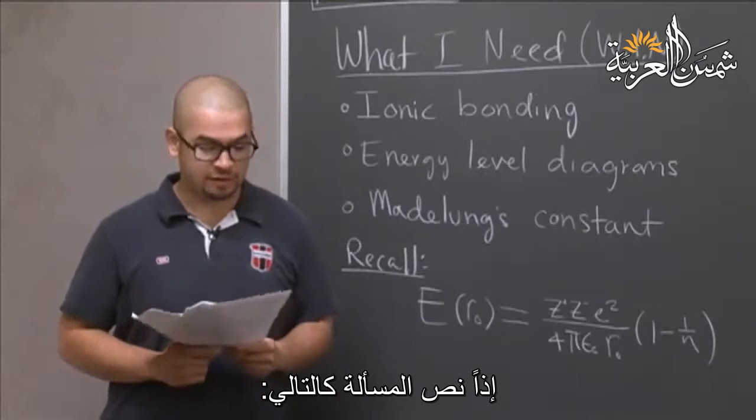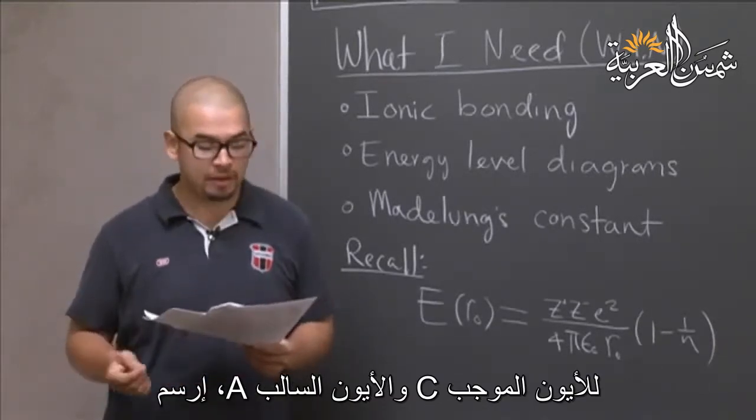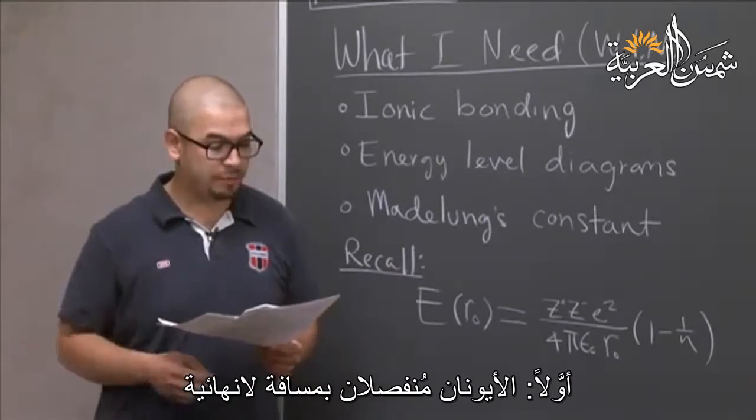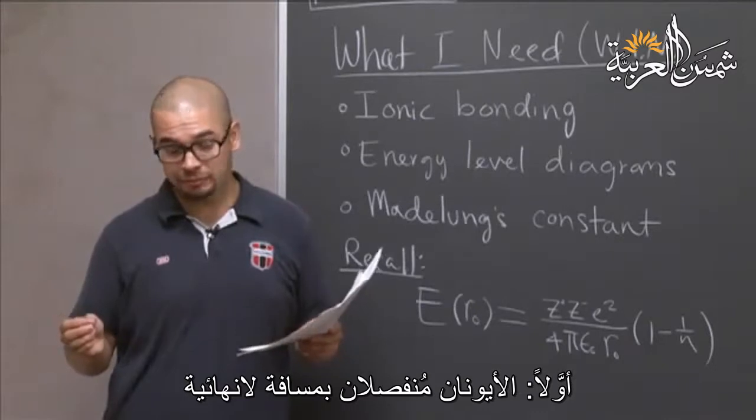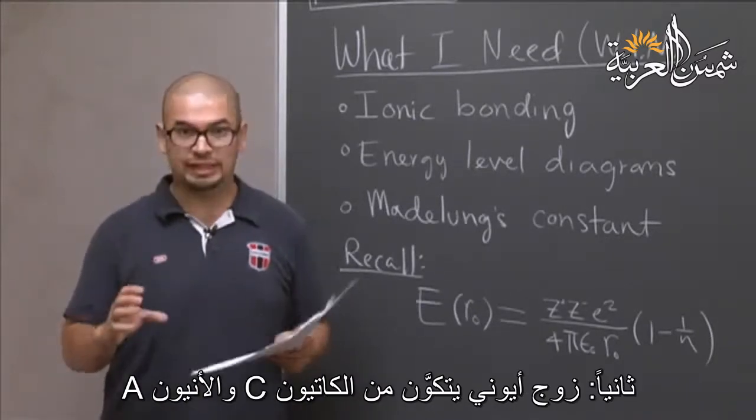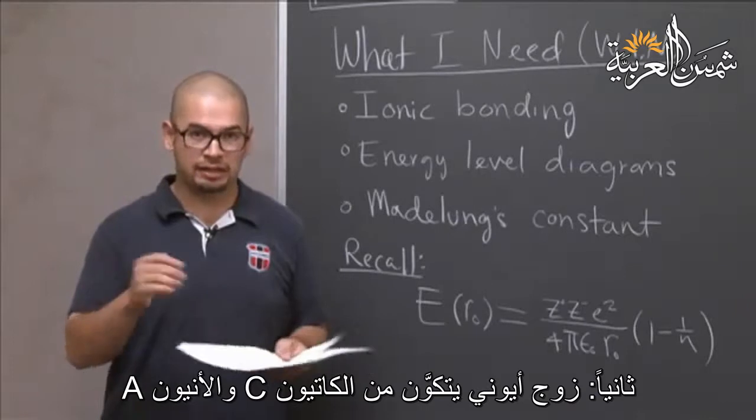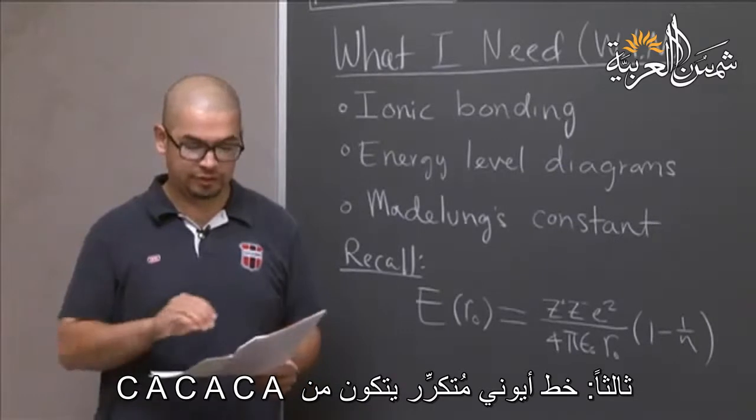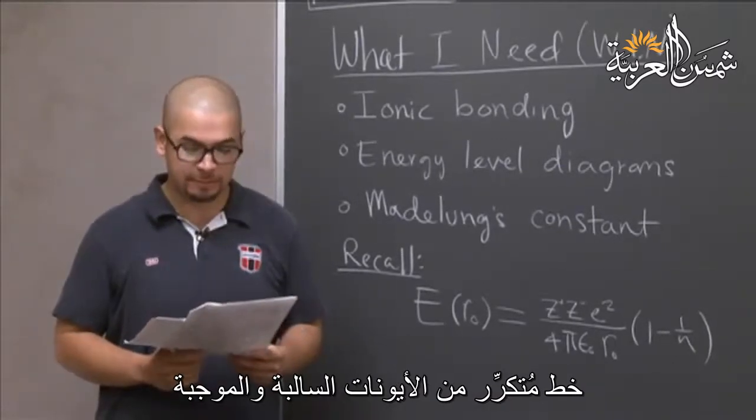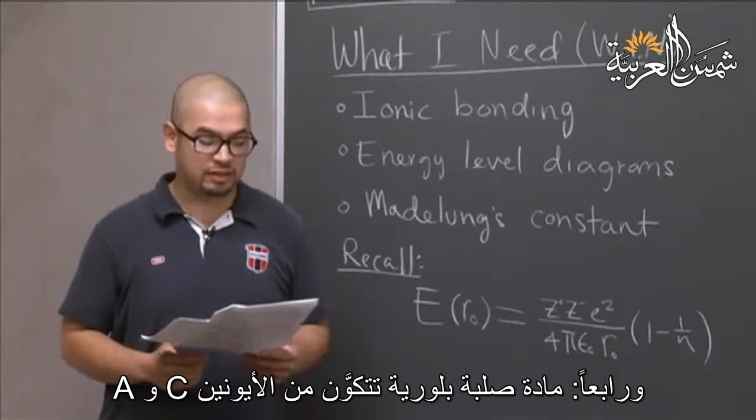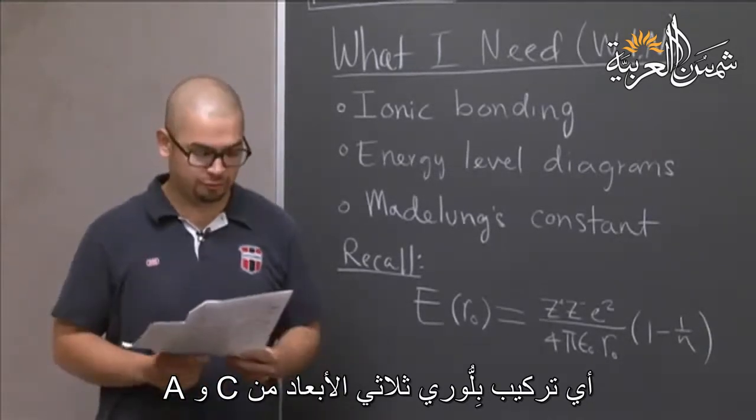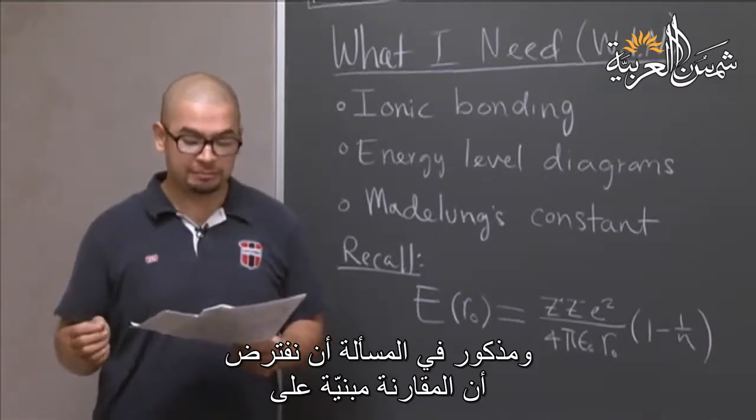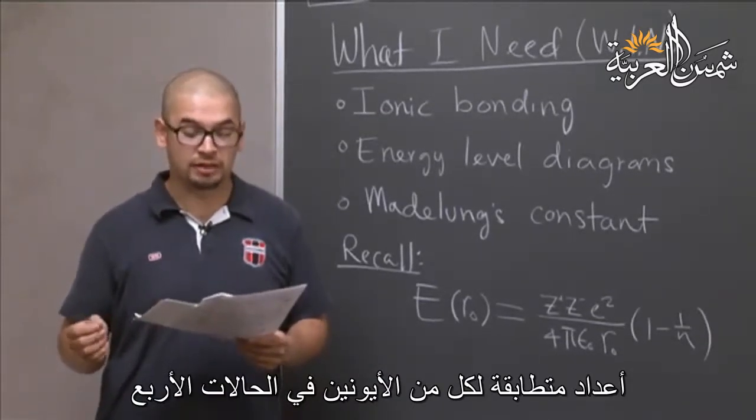So, the problem reads as follows. For a given cation C and anion A, show that the following four energy states on the same energy level diagram. One, ions at infinite separation. Two, an ion pair, C and A. C stands for cation, A stands for anion. Three, an ion line, C, A, C, A, C, A. It's just a repetitive line of ion and cations. And four, a crystalline solid of CA. So it's a three dimensional crystal structure with C and A. And it says also, that assume that the comparison is based upon identical numbers of ions in all four states.